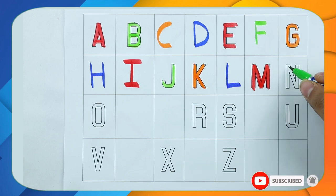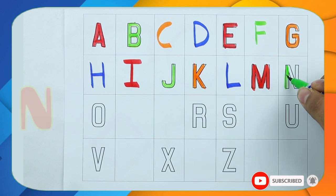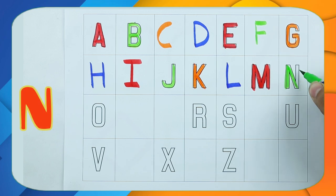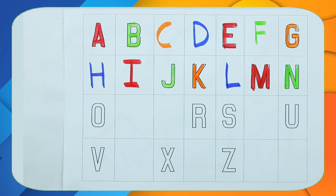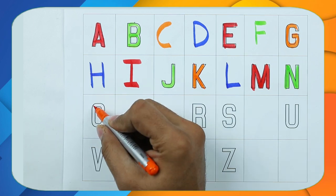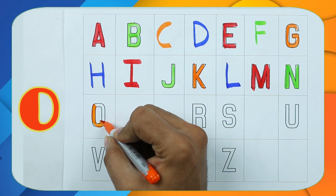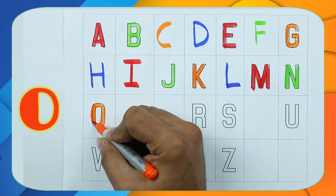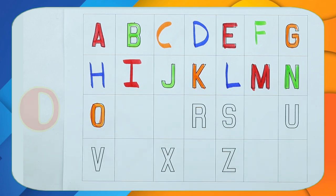Tell me. Right. N for nest with green color. O for octopus with orange color. What's next?